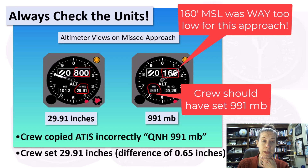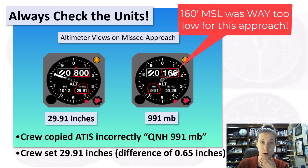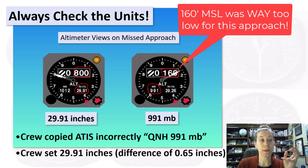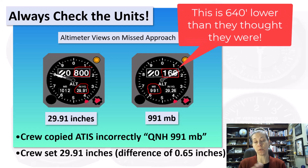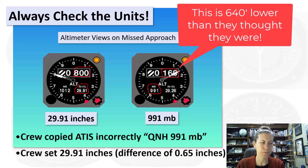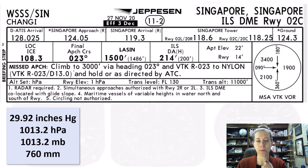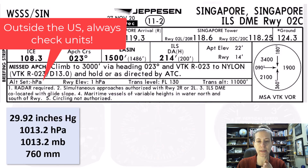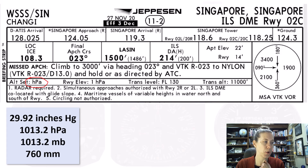They estimated that they came within a few feet of hitting the water on the approach. Thankfully, it was an approach that involved going over the water, so they did not hit anything — but they turned out to be about 640 feet lower than they thought they were. They had set the wrong altimeter: instead of setting 991 millibars, they assumed 991 meant 29.91 inches of mercury.